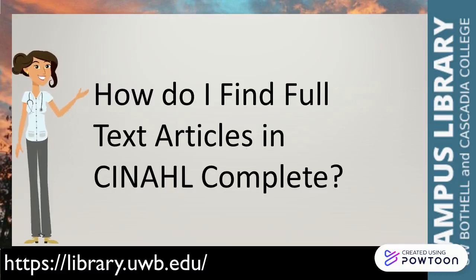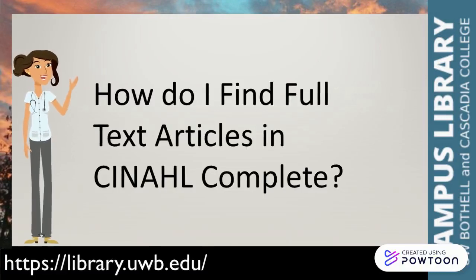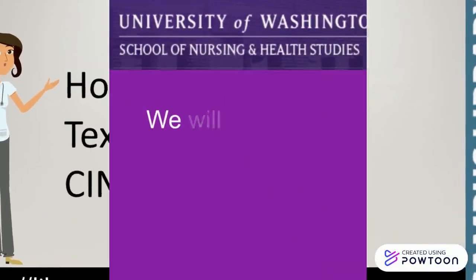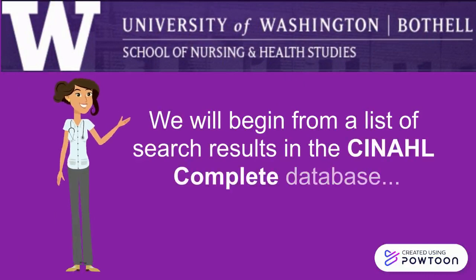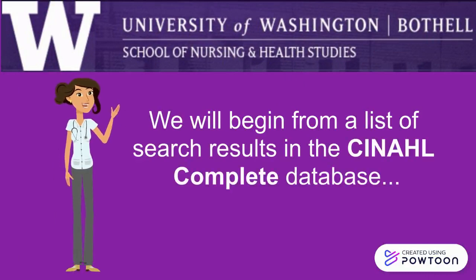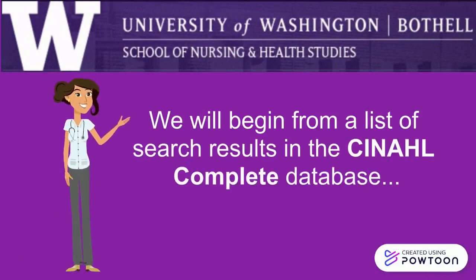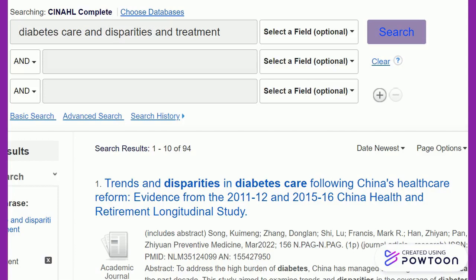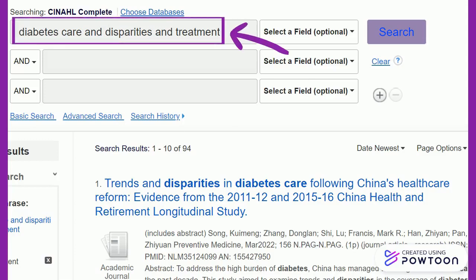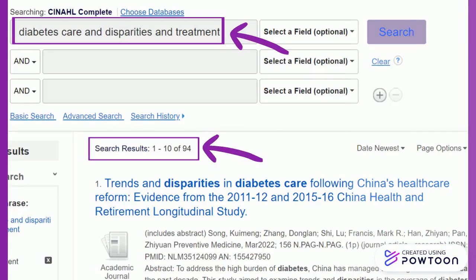How do I find full-text articles in CINAHL Complete? We will begin from a list of search results in the CINAHL Complete database. Here is the search results page in CINAHL with the keywords Diabetes Care, Disparities, and Treatment typed into the search box. The number of search results for these keywords is 94.